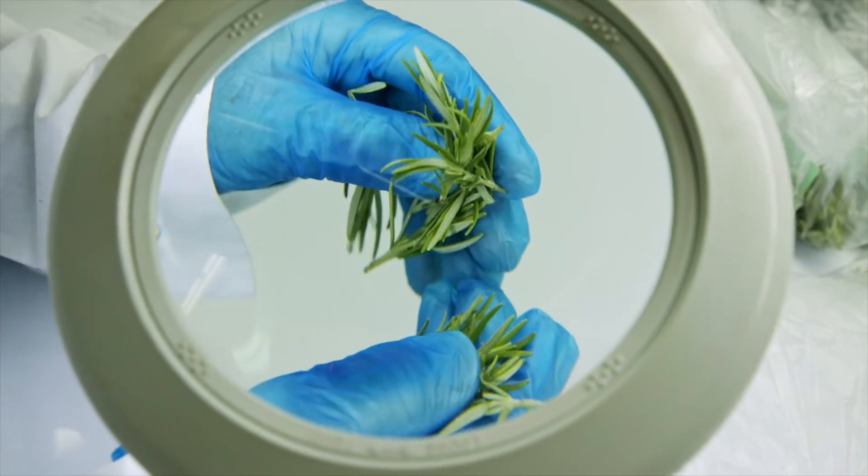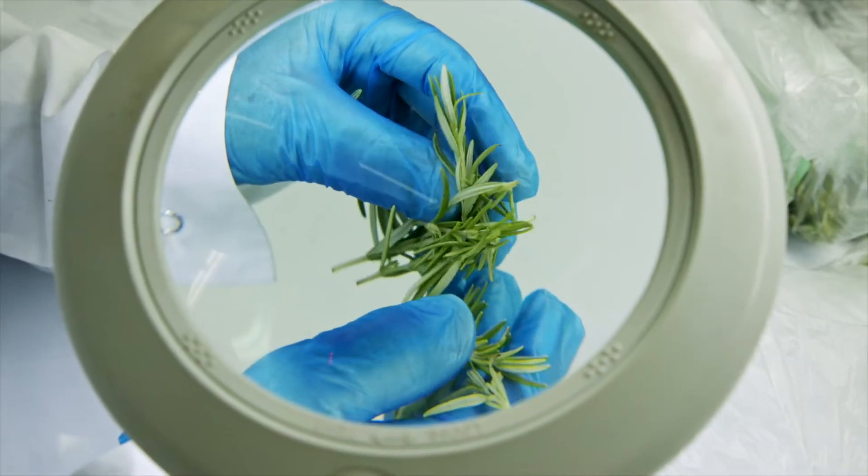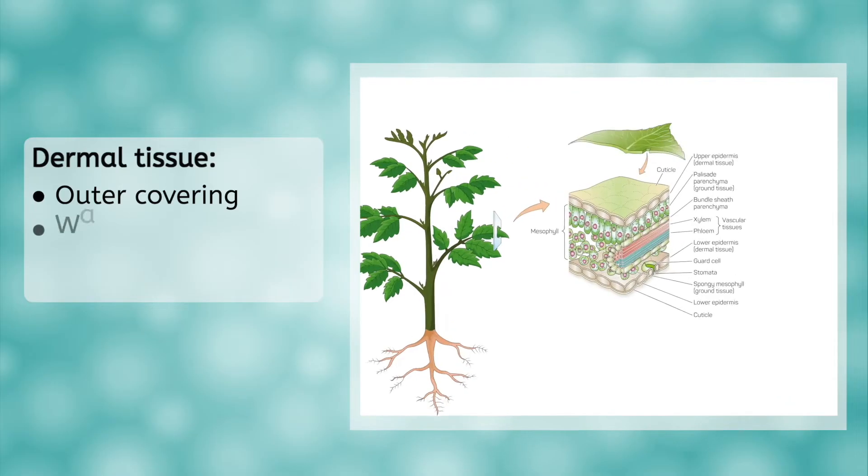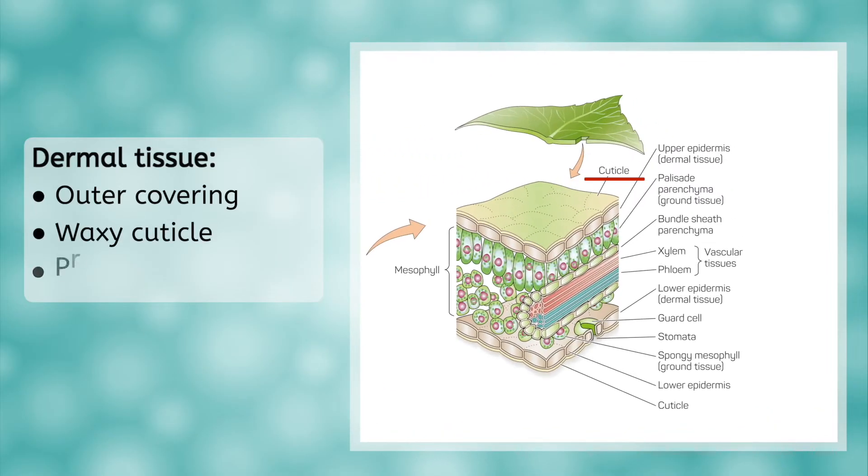Plants have different types of tissues as well. The dermal tissue of plants make up their outer covering. It includes a waxy cuticle that helps protect the plant against water loss.